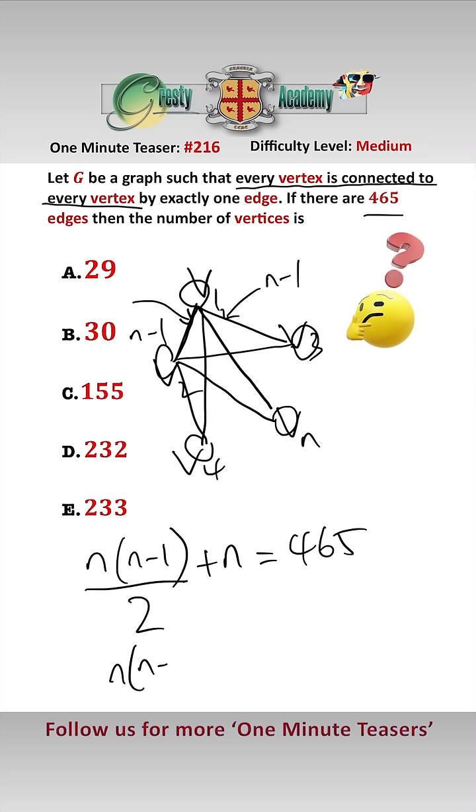Tidying this up, we get N times N-1, add 2N, equals 930. That is, N-squared add N equals 930, which by inspection we can solve, giving N equals 30, answer B.